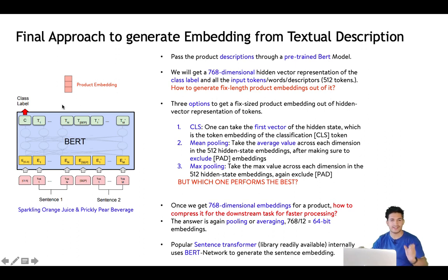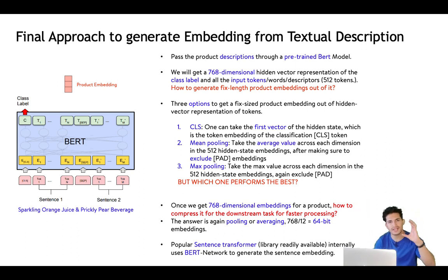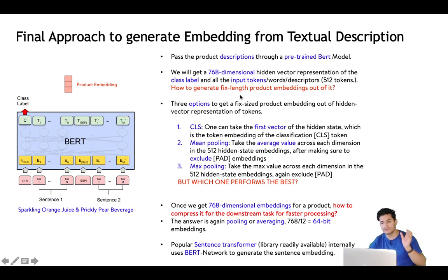So for 20 words, you get 768 × 20 such a large representation. We want to condense this to just 32 or 64 bits. We get 768-dimension hidden vector representations for the class label as well as all input tokens, with a maximum of 512 tokens. There are three options for generating a fixed-length embedding from this.